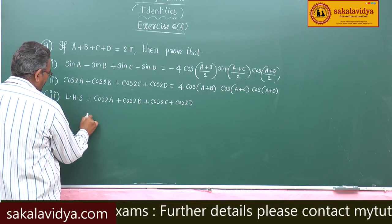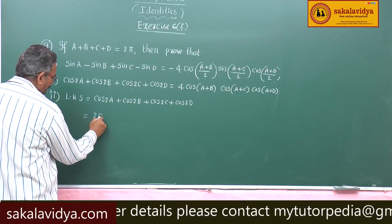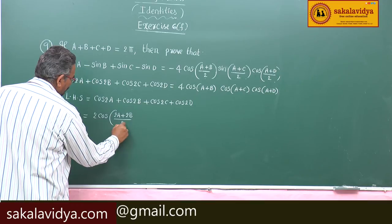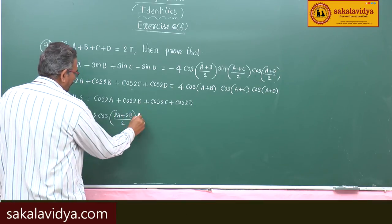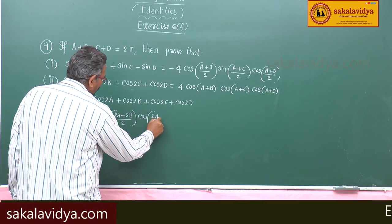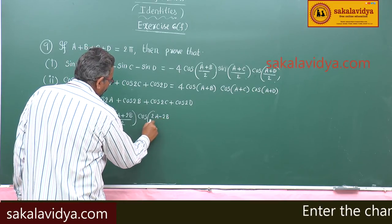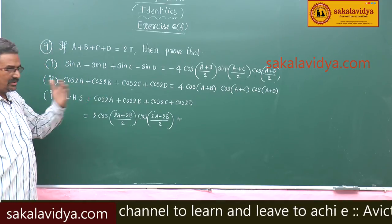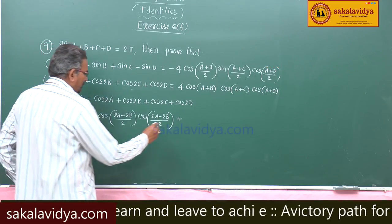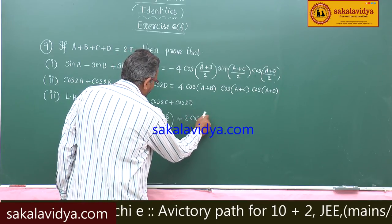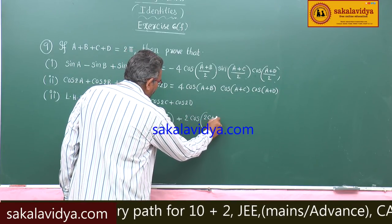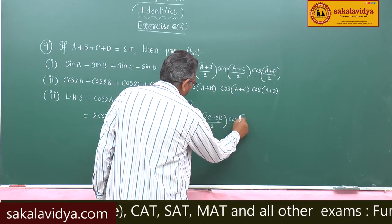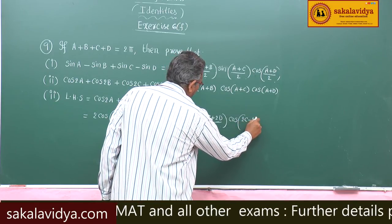This is cos C plus cos D: 2cos of (2A + 2B)/2 times cos of (2A − 2B)/2, plus cos2C plus cos2D written as 2cos of (2C + 2D)/2 times cos of (2C − 2D)/2.